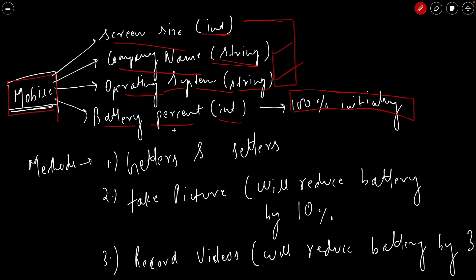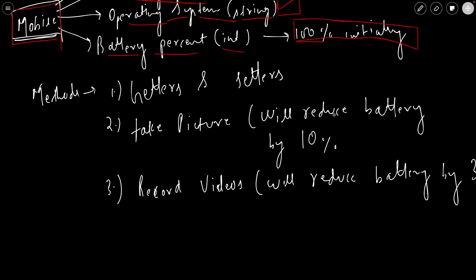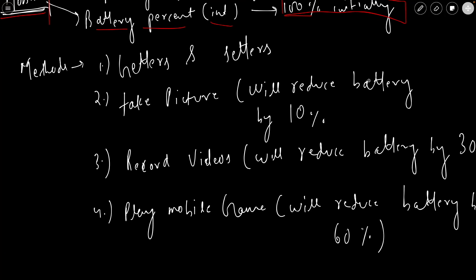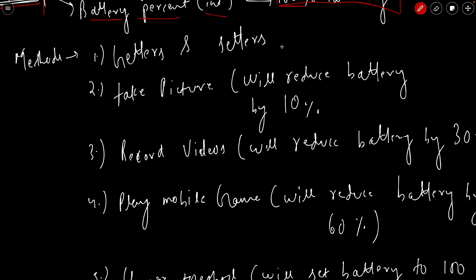Battery shouldn't be in the constructor. What we need to do is set it to 100 percent as we create any object of the Mobile class. That's all about the properties or fields. Now let's look at the methods. We'll have getters and setters - very straightforward. In the last video we discussed what getters and setters are and how we create them.